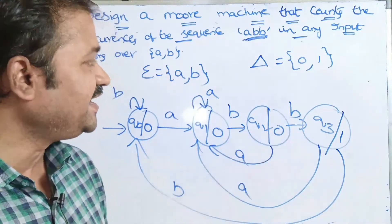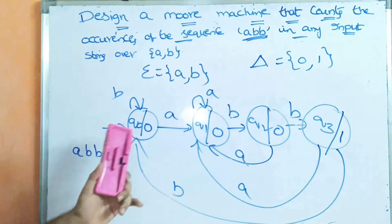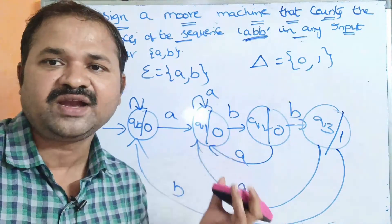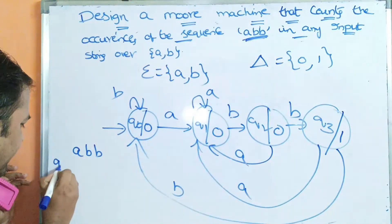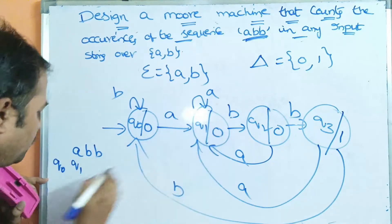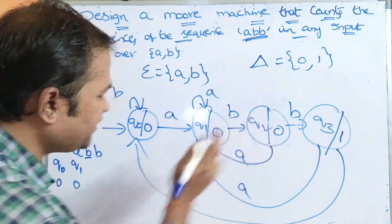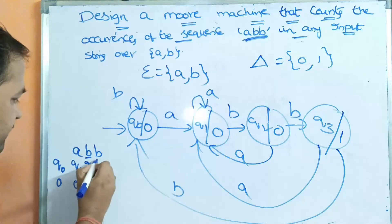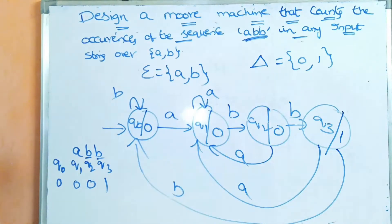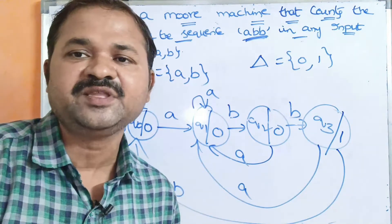Now let's check whether this is a valid Moore machine by taking an input string ABB. ABB occurs one time. We always start from the initial state Q0. Q0 on A goes to Q1; Q1 output is 0. Q1 on B goes to Q2; Q2 output is 0. Q2 on B goes to Q3; Q3 output is 1. So we have the sequence ABB, and that's why we got 1 as output — ABB occurred one time.